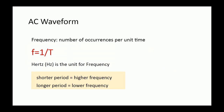There is another term called frequency, which tells how many times a particular waveform occurs within one second, and it is indicated by the unit Hertz. Since frequency and period are in a reciprocal relationship, a shorter period means higher frequency and a longer period means lower frequency.